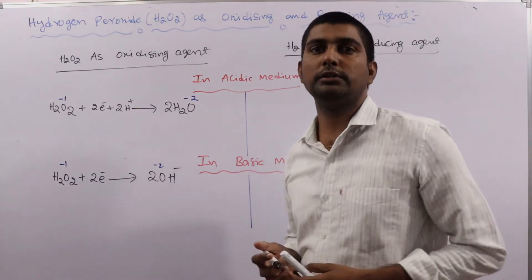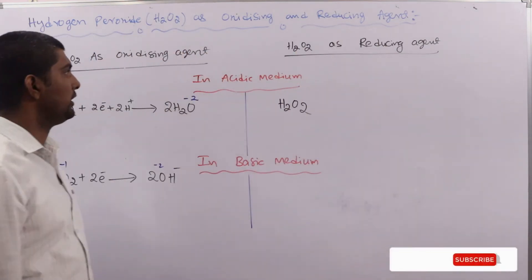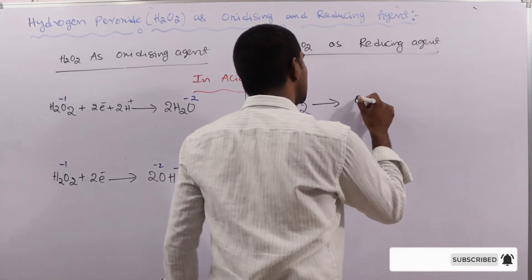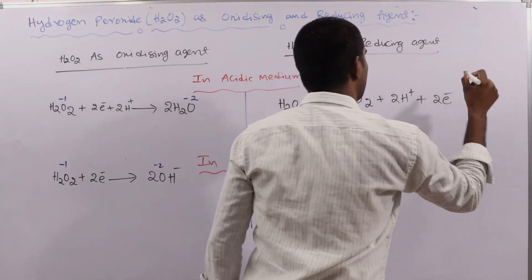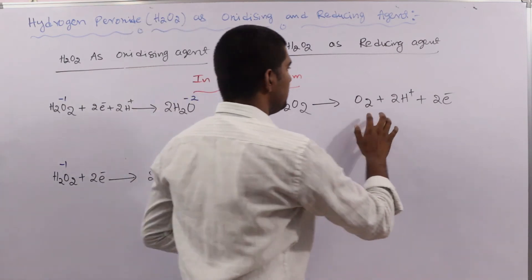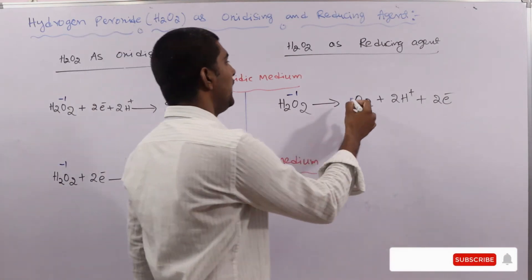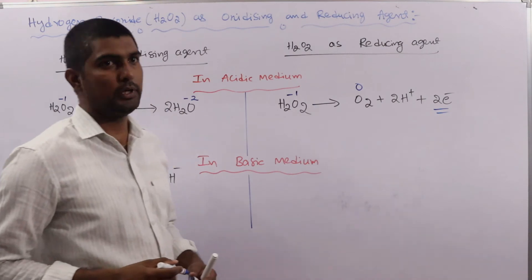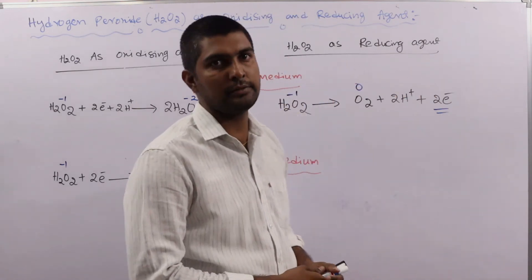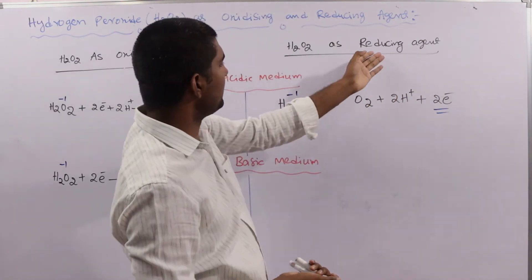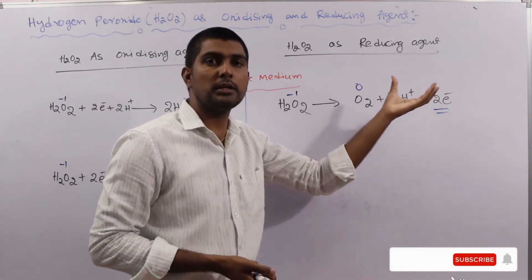Now H2O2 as a reducing agent — a reducing agent undergoes oxidation. When H2O2 acts as a reducing agent in the acidic medium, the reaction is: H2O2 gives O2 + 2H⁺ + 2e⁻. The oxidation state of oxygen goes from −1 in H2O2 to 0 in O2, and two electrons are released. By giving electrons to the other species it reduces other substances, so that's why it is acting as a reducing agent in acidic medium.